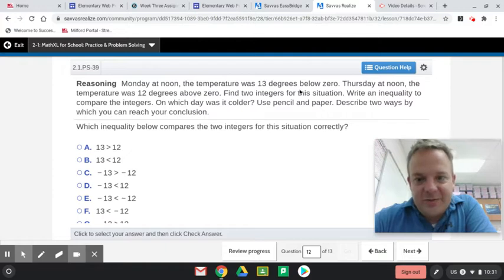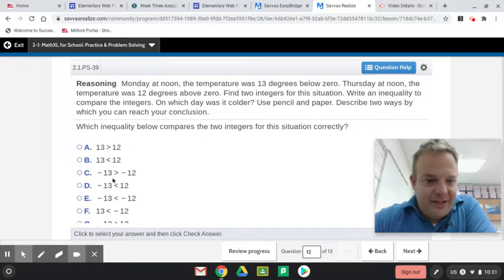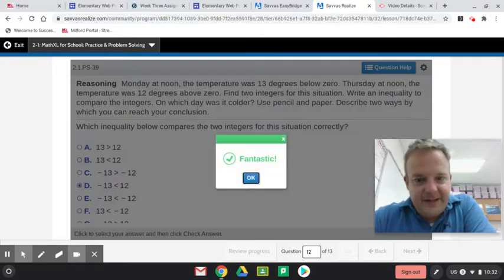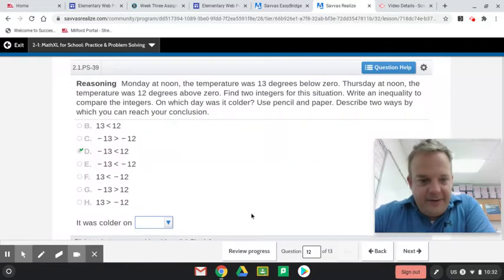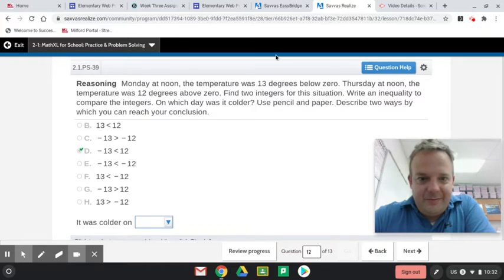Monday at noon, the temperature was 13 degrees below zero. Thursday at noon, the temperature was 12 degrees above zero. Find the two integers. So negative 13 and 12. We're going to do an inequality. These are inequality symbols. This means greater than. That means less than. So negative 13 is less than positive 12. It was colder on Monday because it was below zero.